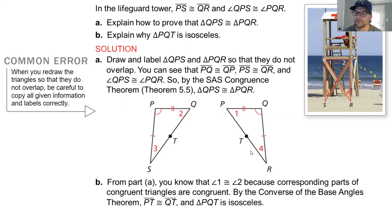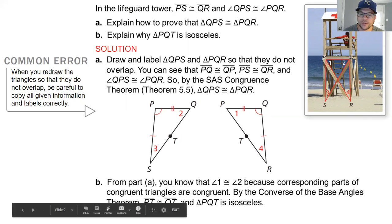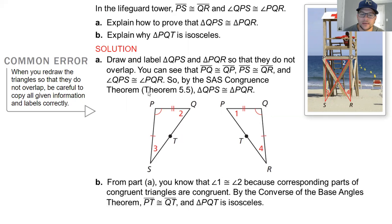And based on the converse of the base angle theorem, you can say that with this isosceles triangle, PT is congruent to QT, which is where that overlap came from, and triangle PQT is an isosceles triangle.